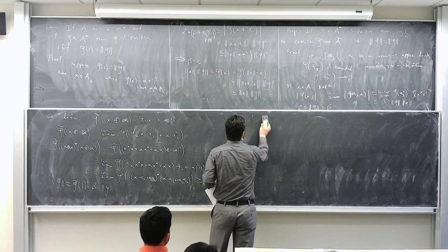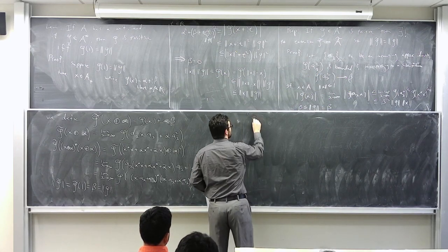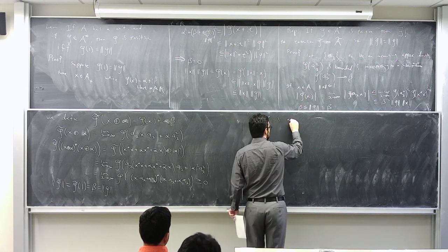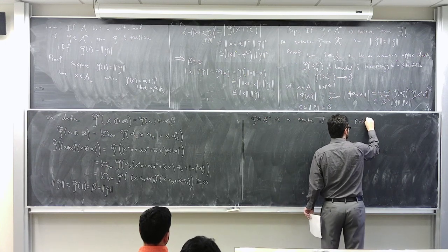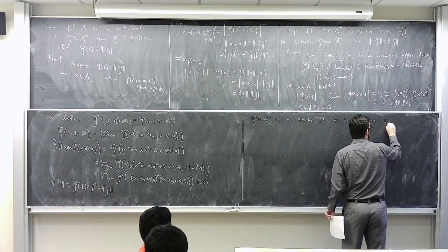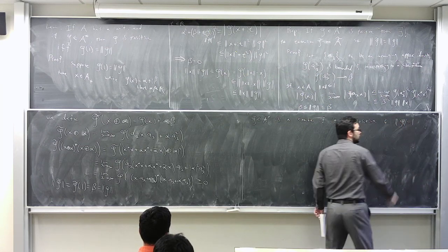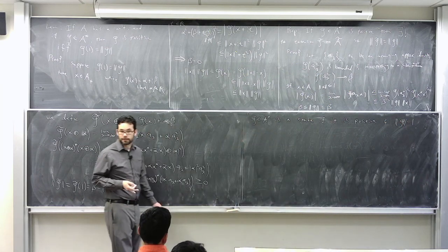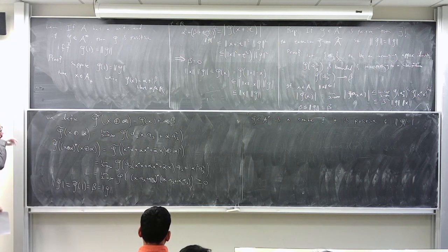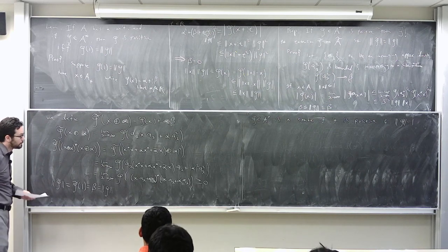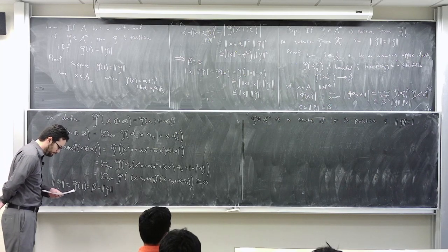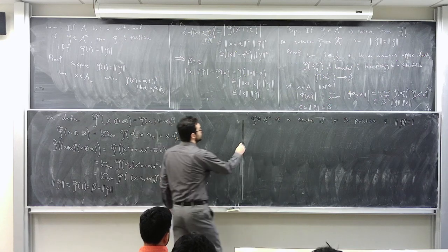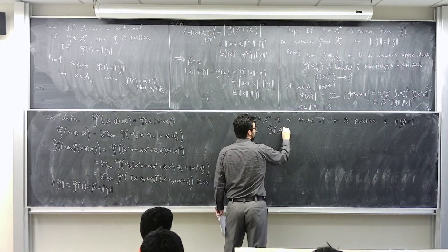This means that when dealing with positive linear functionals, we can almost always consider the case where A is unital by passing to the unitization and taking the unique extension. We let S(A) denote the state space.